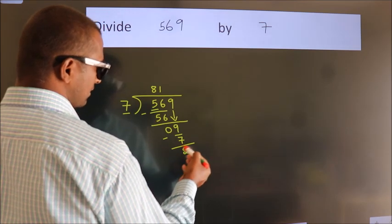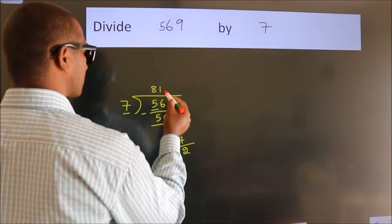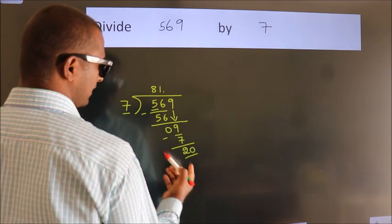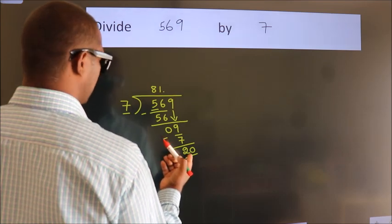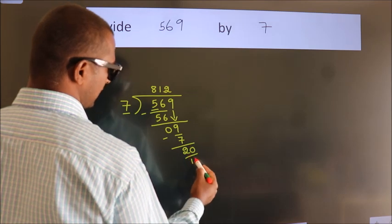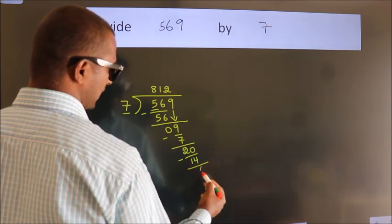After this, no more numbers to bring it down. So what we do is, we put dot, take 0. So 20. A number close to 20 in 7 table is 7 2's 14. Now we subtract. We get 6.